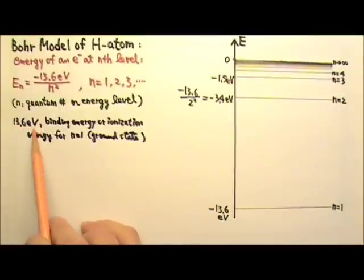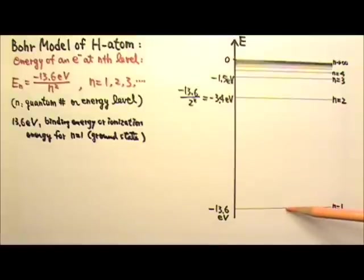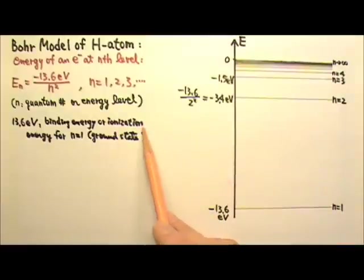The 13.6 eV is the binding energy or ionization energy for N equals 1, the ground state. Which means if an electron is at the ground level, we will need to provide 13.6 eV to bring that electron to E equals 0, so that electron can be freed and leave the atom and therefore the atom becomes ionized. That's why it's called the ionization energy.